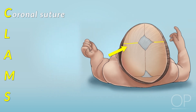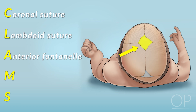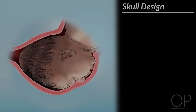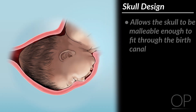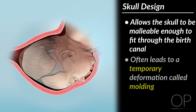C is for coronal suture, L is for lambdoid suture, A is for anterior fontanelle, M is for metopic suture, S is for sagittal suture. This design allows the skull to be malleable enough to fit through the birth canal, which often leads to a temporary deformation called molding.